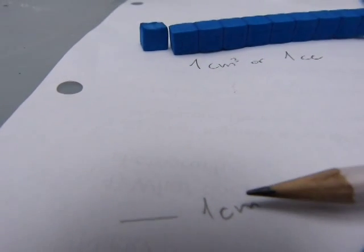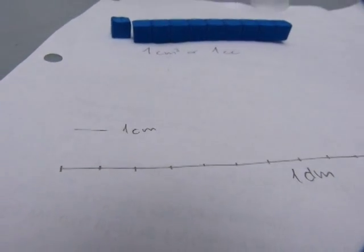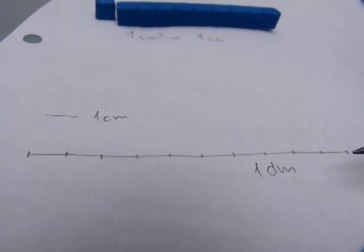Now, one centimeter is a linear length. The length of that line is one centimeter, and we know that ten of these centimeters make a decimeter.